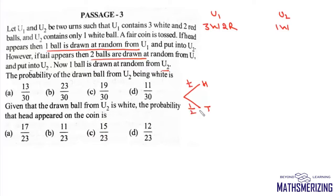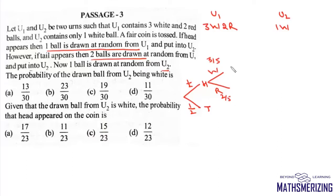If it is head then 1 ball is drawn at random from U1 and put into U2. This 1 ball could be either white or red. The probability of getting a white ball is 3/5 and red ball is 2/5. If it is white, U2 will have 2 white now, and if it is red it will have 1 white and 1 red.